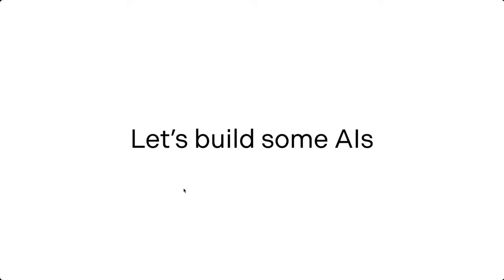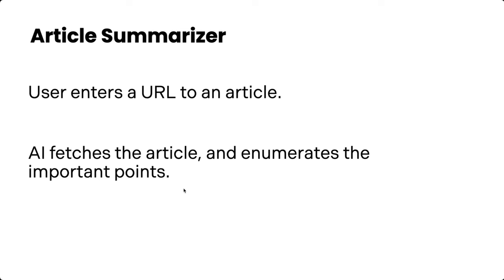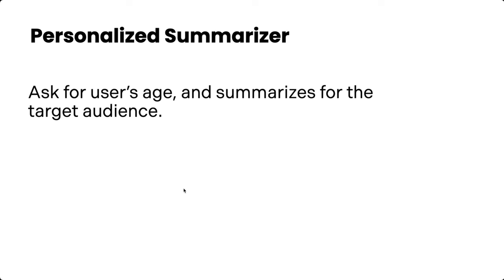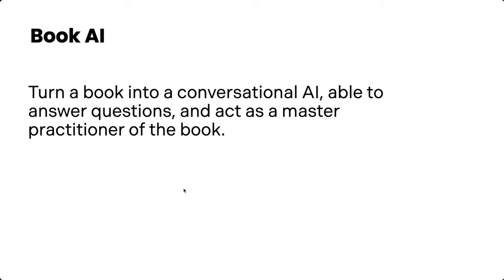Let's look at what we'll build today. First: an article summarizer — a user enters a URL, it fetches that URL and enumerates all the important points. Then we'll make it personalized by asking the user their age and summarizing accordingly. We'll also create a book AI — we'll take a book and turn it into an AI and chat with it.